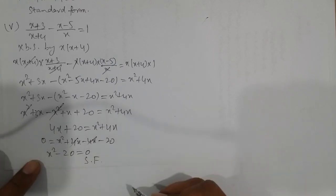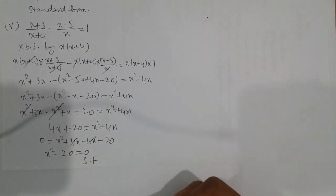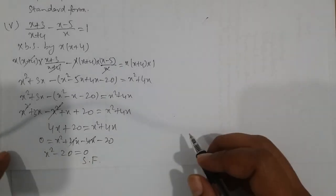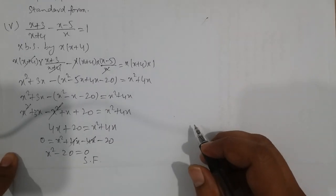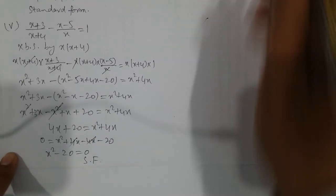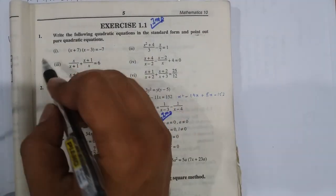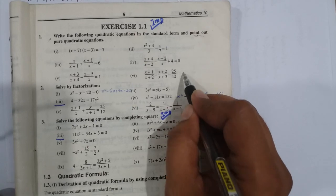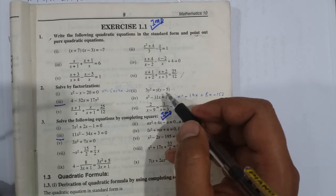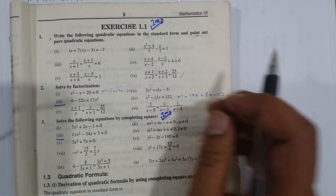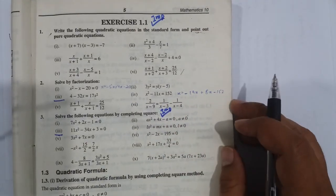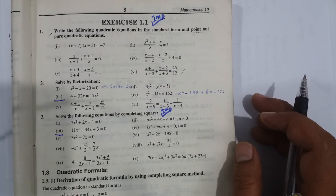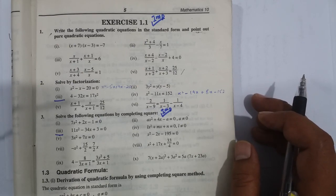In this way we can find out the standard and pure forms of quadratic equations. You have to complete all six parts of question number one of this exercise by yourself. We will discuss the next question in the next lecture. Thank you, Allah Hafiz.